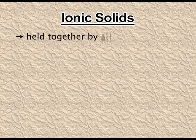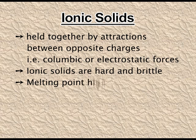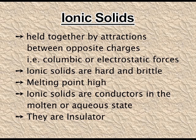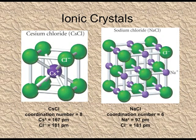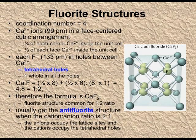Ionic solids are those in which the constituent particles are ions — cations and anions — with strong intermolecular forces, that is columbic or electrostatic forces of attraction. Since these forces are very strong, ionic solids are very hard and have a very high melting point. Ionic solids are conductors when in the molten or aqueous state, but when in the solid state, they are insulators. Examples include caesium chloride, sodium chloride, zinc blende, and calcium fluoride (fluorite structure).